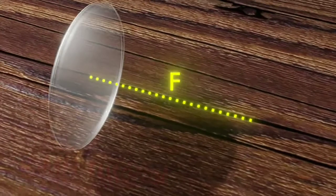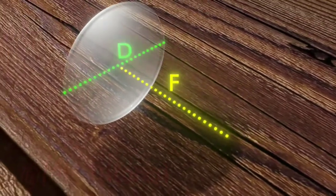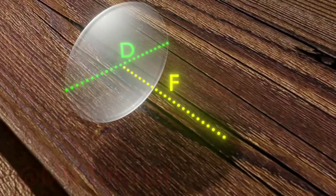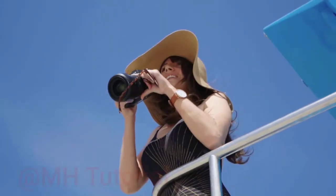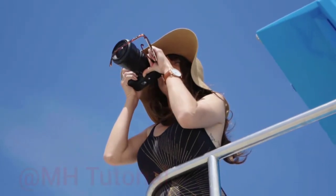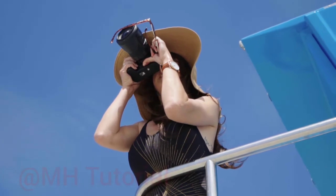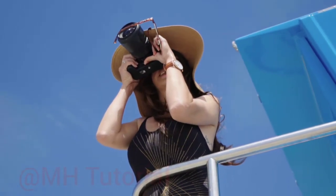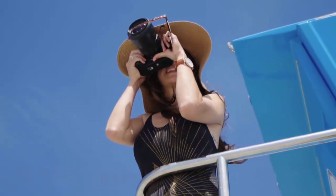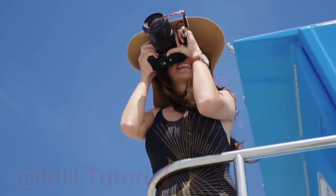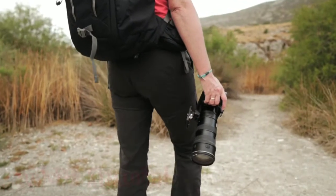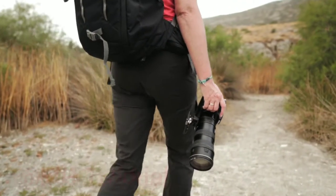Now, if the focal length of a lens is F and the diameter of the lens is T, then its minimum f-number is F divided by T. So we understand the minimum f-number of a lens. What is the maximum value of the f-number? Well, it depends on the functionality of a camera or other optical instrument.